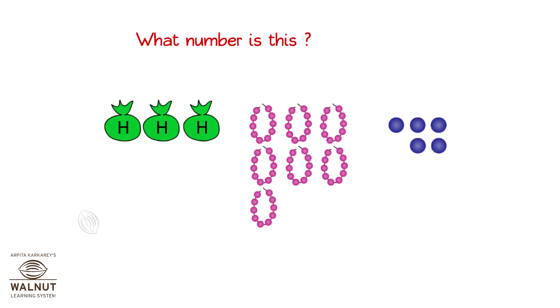What number is this? There are 3 hundreds, 7 tens and 5 units. So the number is 375.